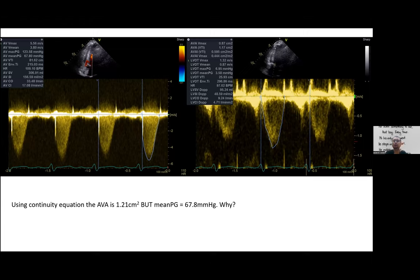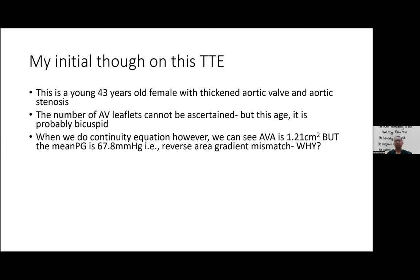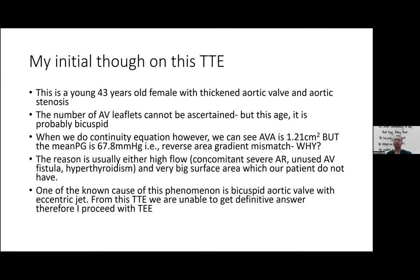The most common cause of reverse area-gradient mismatch is a high-flow state — someone with a large body surface area, hyperthyroidism, or an arteriovenous fistula. But this patient doesn't have concomitant severe aortic regurgitation, is not hypothyroid, and has a normal body size — so why does this patient have reverse area-gradient mismatch?